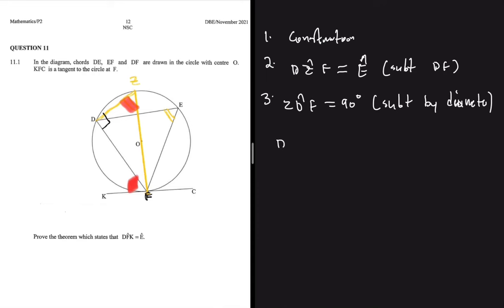We're going to get DZF plus angle ZDF plus angle DFZ equals 180 degrees. DZF is the angle we're interested in. So we have DZF plus ZDF, which we just said is 90 degrees, plus DFZ equals 180 degrees.